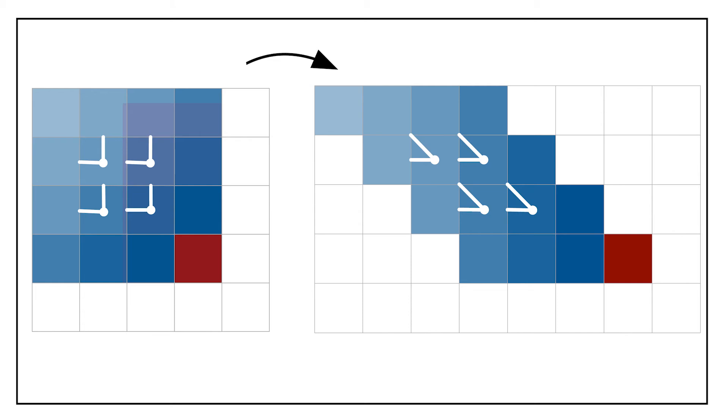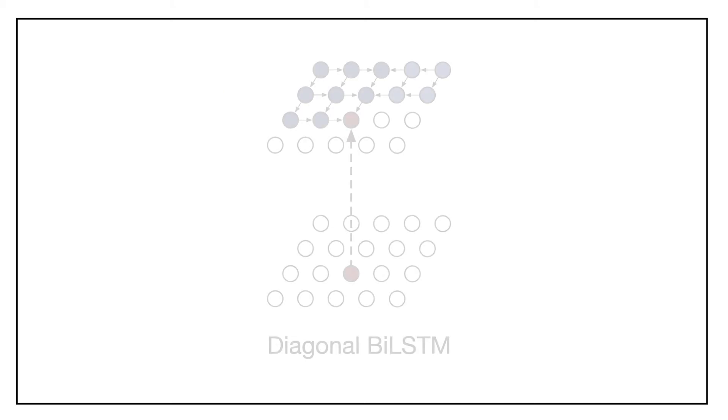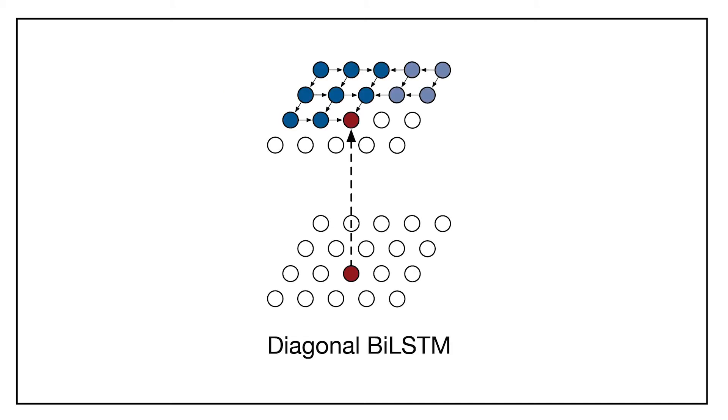When the spatial layer is computed left to right and column by column, the output map is shifted back into the original size. The advantage of using a Diagonal BiLSTM is that it computes the state for an entire diagonal at once, using all available contexts and using a global receptive field.